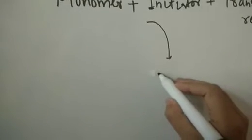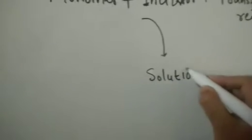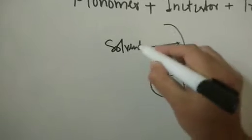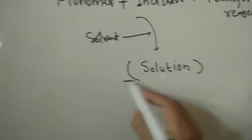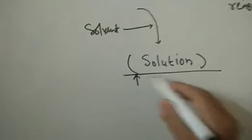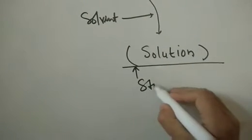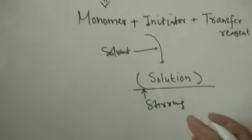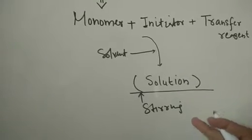We dissolve the monomer, initiator, and chain transfer agent in a suitable solvent so that we get a solution. Then we stir the solution using a magnetic stirrer. During the course of stirring, the monomers will start reacting.